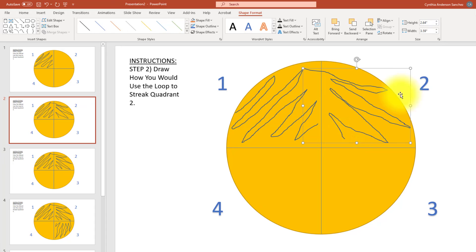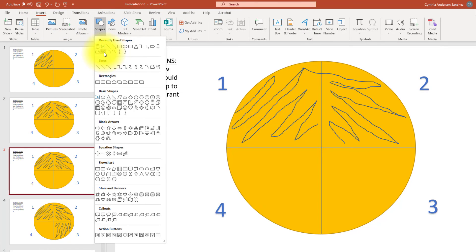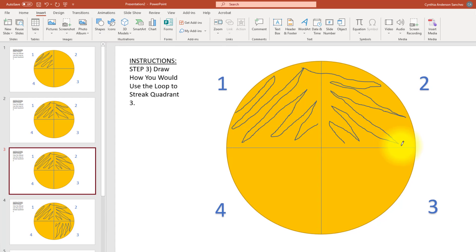Moving on to slide three, step three, draw how you would use the loop to streak quadrant three. Go to Insert, Shapes, Scribble. And don't forget to drag a small amount of the inoculum from quadrant number two into quadrant number three.